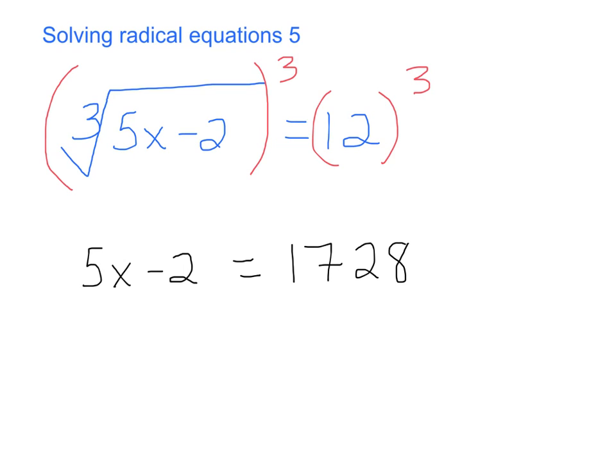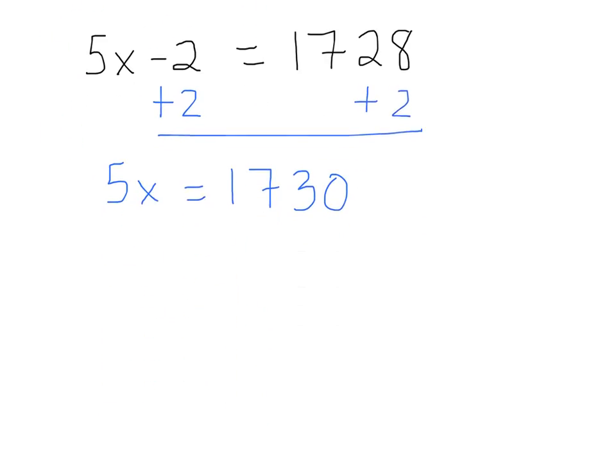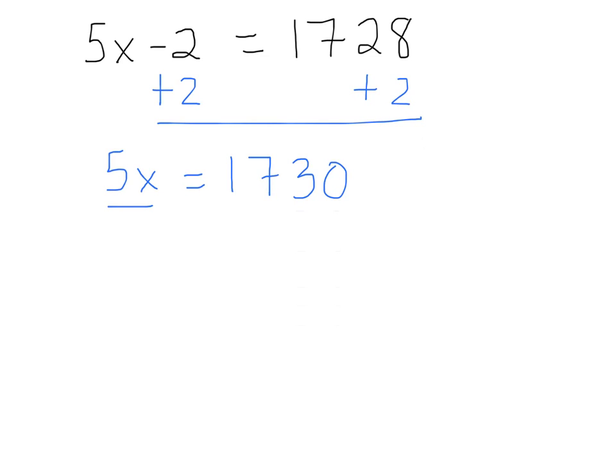Now what should I do to solve this equation? Add 2 to both sides. And so I have 5x equals 1,730, right? What's my last step? Divide by 5 on both sides. And so x equals what? 346.